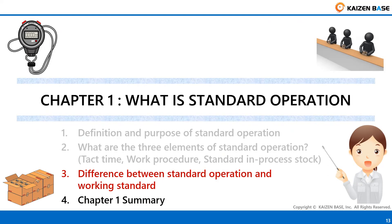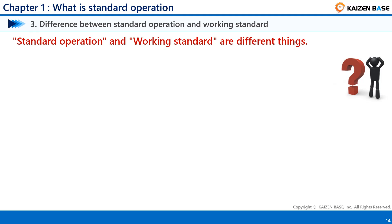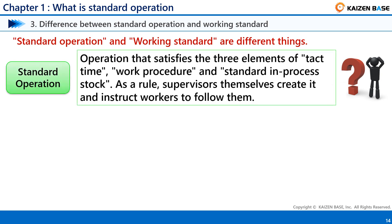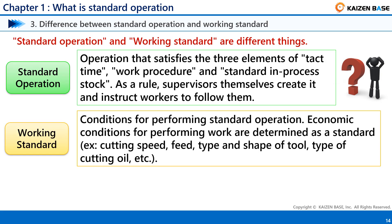Next is the difference between Standard Operation and Working Standard. People are often confused, but Standard Operation and Working Standards are different. Standard Operation is work that satisfies the three elements of Takt Time, Work Procedure, and Standard In-Process Stock as learned in this lecture. As a rule, supervisors themselves create these and instruct workers to follow them. On the other hand, Working Standard refers to the conditions for performing Standard Operation — the technical conditions for performing work are determined as a standard.